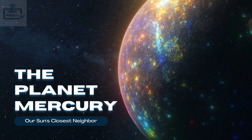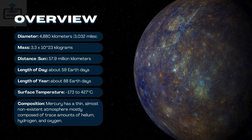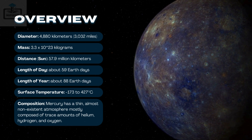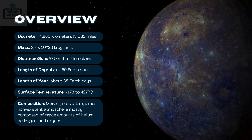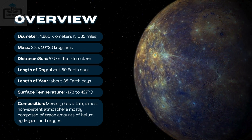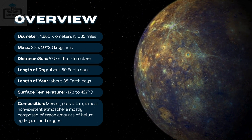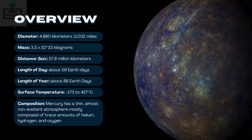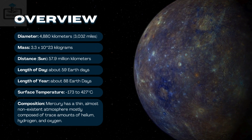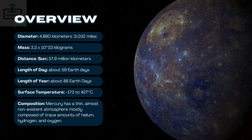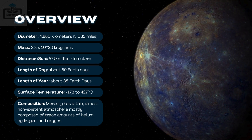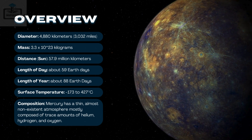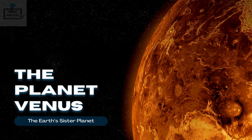1. The planet Mercury, our Sun's closest neighbor. Overview: Diameter — 4,880 kilometers (3,032 miles). Mass — 3.3 × 10^23 kilograms. Distance from Sun — 57.9 million kilometers. Length of day — about 59 Earth days. Length of year — about 88 Earth days. Surface temperature — minus 173 to 427 degrees Celsius. Composition: Mercury has a thin, almost non-existent atmosphere, mostly composed of trace amounts of helium, hydrogen, and oxygen.